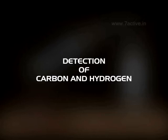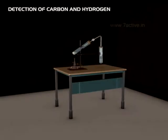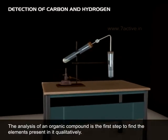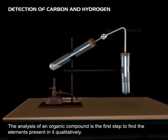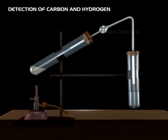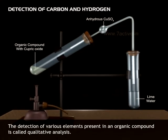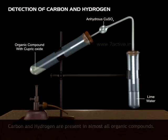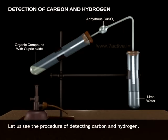Detection of carbon and hydrogen. The analysis of an organic compound is the first step to find the elements present in it qualitatively. The detection of various elements present in an organic compound is called qualitative analysis. Carbon and hydrogen are present in almost all organic compounds. Let us see the procedure of detecting carbon and hydrogen.